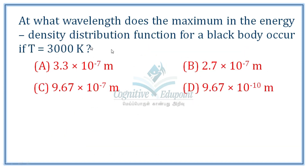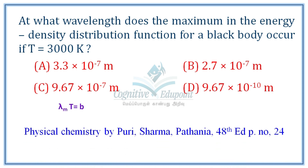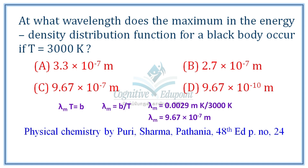Next question: At what wavelength does the maximum energy in the energy density distribution function for a black body occur, if T equals 3000 Kelvin? Using Wien's displacement law (related to Planck's radiation law), substituting the values gives 9.67 × 10⁻⁷ meters. Correct answer: C.